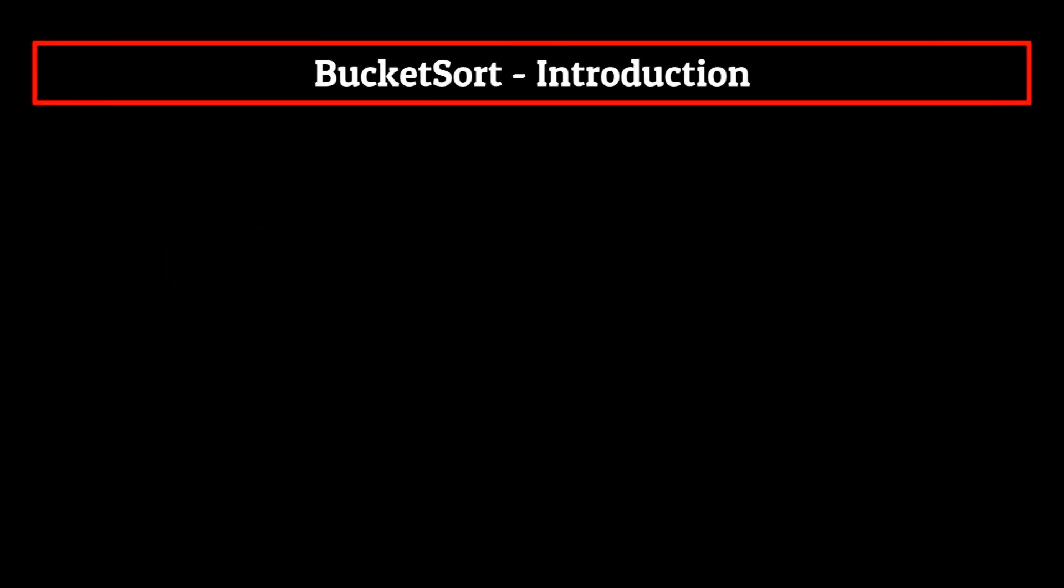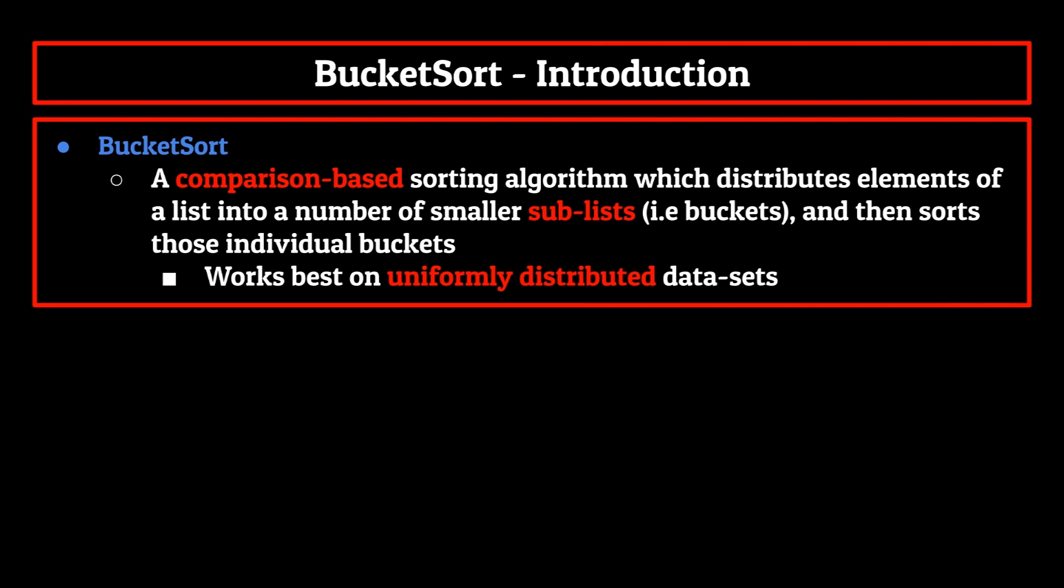To be more specific, we can now formally define bucket sort as a comparison based sorting algorithm which distributes elements of a list into a number of smaller sub lists, i.e. buckets, and then sorts those individual buckets using another sorting algorithm.